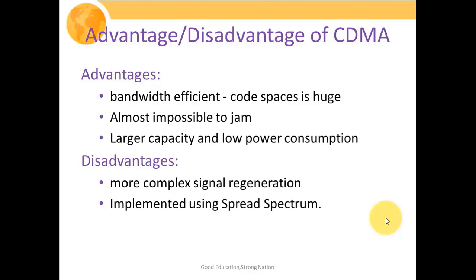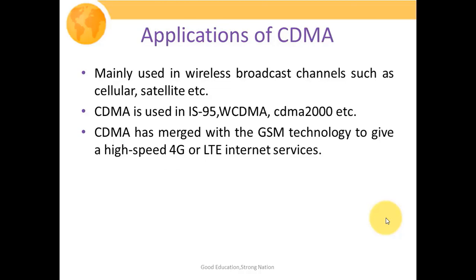The disadvantages of CDMA systems are more complex signal generation. Since we exploit spread spectrum communication systems, generation and reception are quite complex, demanding high synchronization in the PN sequence. The applications of CDMA systems are mainly in wireless broadcast channels such as cellular and satellite systems. CDMA is used in IS-95 (CDMA mobile phone systems), WCDMA, CDMA2000, and others. CDMA has merged with GSM technology to provide high-speed 4G or LTE internet services.